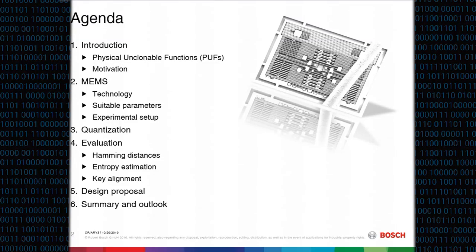Here is the outline of my talk. I start with a short introduction into PUFs and give a short motivation, then discuss the reasons for variation of the MEMS parameters and explain the parameters we use for key derivation. Then I explain the experimental setup, the procedure to quantize analog measurement values into binary strings, the evaluation section covering Hamming distances, entropy estimation, and key alignment, then our design proposal for a dedicated MEMS PUF, and conclude with a summary and outlook.